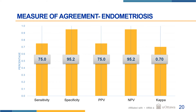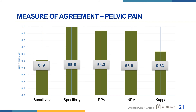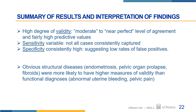For cases identified as endometriosis, we found a sensitivity of 75%, a specificity of 95%, and a strong kappa agreement. And finally, for chronic pelvic pain, we found a sensitivity of 51%, a high specificity of 99.6%, and a strong kappa agreement of 0.6.